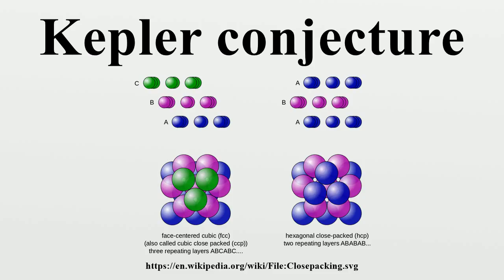In 1992, assisted by his graduate student Samuel Ferguson, he embarked on a research program to systematically apply linear programming methods to find a lower bound on the value of this function for each one of a set of over 5,000 different configurations of spheres. If a lower bound could be found for every one of these configurations that was greater than the value of the function for the cubic close packing arrangement, then the Kepler conjecture would be proved.